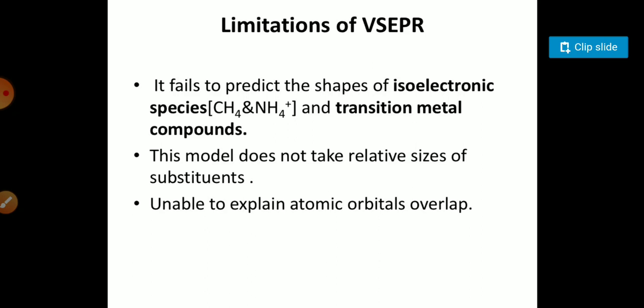Limitations of VSEPR theory: it fails to predict the shape of isoelectronic species like complex species or transition metal compounds. This model does not take into account the size of the substituent and is unable to explain the atomic orbital overlapping. So this is all about the VSEPR theory. Thank you very much.